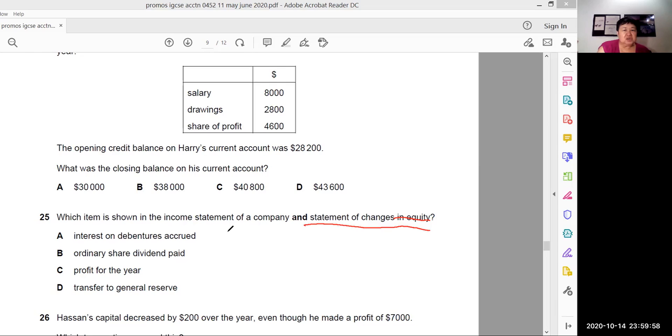Is it A, interest or debentures accrued? No. Ordinary share dividend paid, which is shown in the income statement as well as the statement of changes in equity? Ordinary share dividend is shown paid during the year. It's shown in the statement of changes in equity, but not in both income statement as well as statement of changes in equity. So no. The third one is profit for the year. Yes. Income statement, the purpose is to arrive at profit or loss for the year. Statement of changes. Remember your retained earnings and then the profit for the year is added to the retained earnings. So yes. So I would think the answer is 25C.